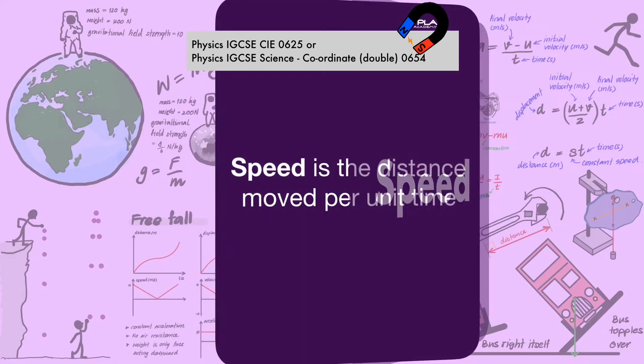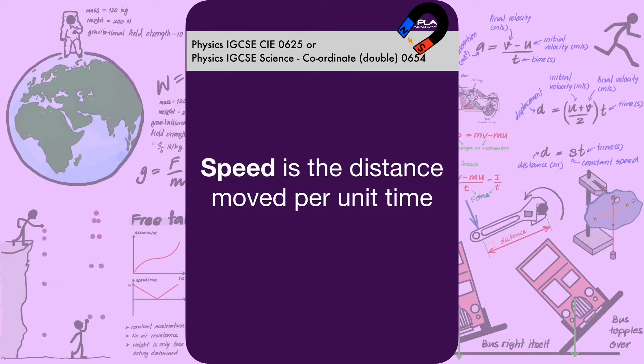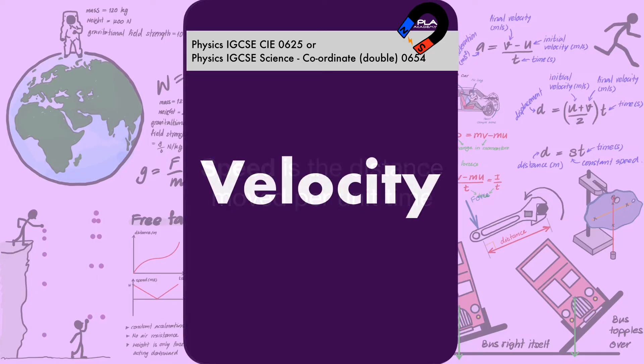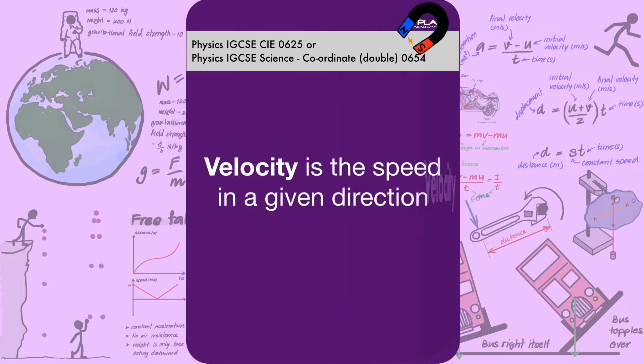Speed. Speed is the distance moved per unit time. Velocity. Velocity is the speed in a given direction.